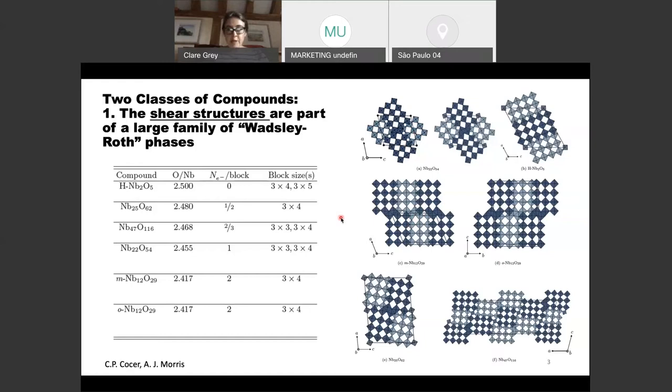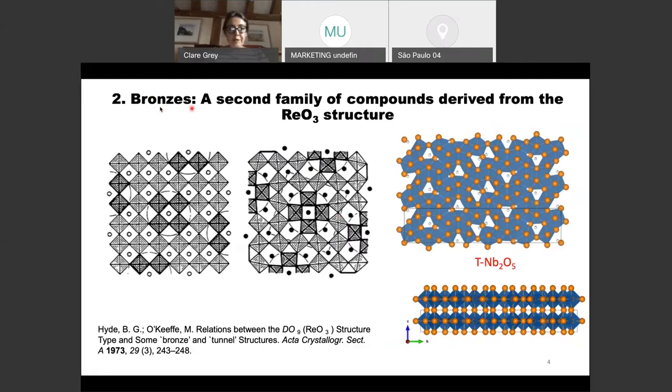That's one way that you can keep these octahedra intact and prevent these rotations. Another way you can do this is via the so-called bronze phases. These are another class of materials which are again derived from the rhenium oxide structure. Instead of shearing, what you do is a rotation. You've created this different arrangement in the ab plane, and that's the basis of a bronze phase, which is illustrated by the low temperature phase or T phase of Nb2O5, and so this again is another way of holding these units intact when you lithiate them.